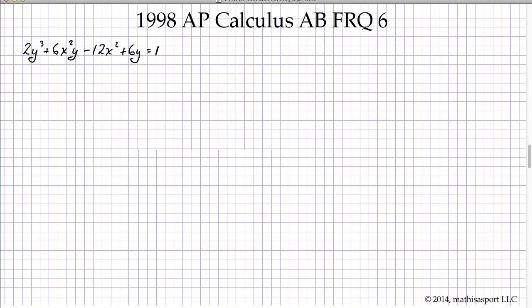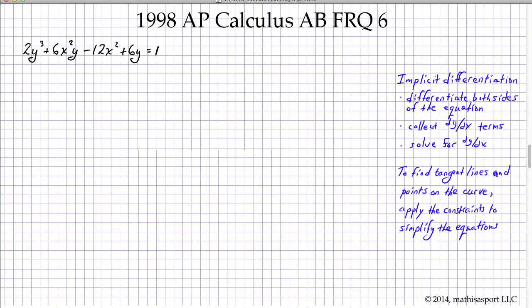We're given a complicated equation designating a curve, and we're going to find dy/dx, a specific tangent line, and a particular point on the curve. We recognize the equation is complex enough that it will be difficult to separate out y, so we're going to use implicit differentiation. When we find the tangent lines and points on the curve, we'll be given constraints that simplify the equations. That's our general approach.